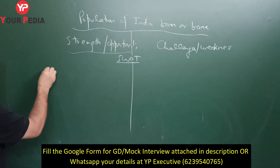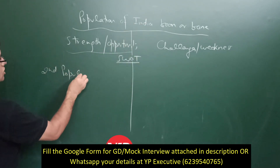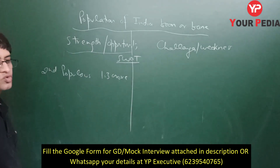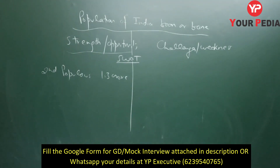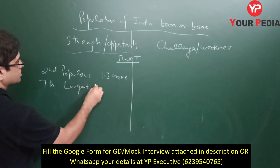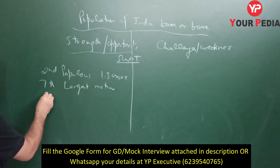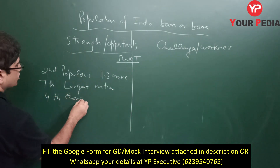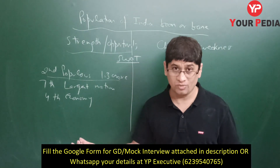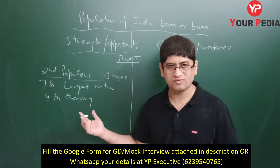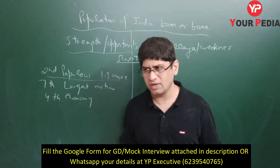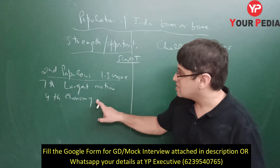As far as Indian population is concerned, we are the second most populous nation in the world with 1.3 billion people as of 2018, second only to China. We are the seventh largest nation by size and the fourth largest economy. To some extent our population justifies our size and our economy. Population density is also explained by our size, and we will very soon become the third largest economy in the world.